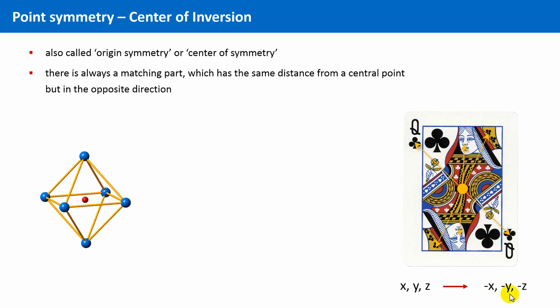You can think of a center of inversion also as a point at which you carry out a mirroring—not at a line or plane, but at a point.